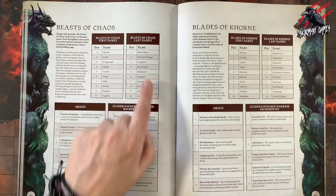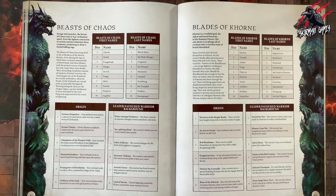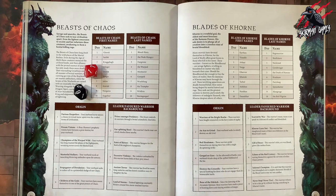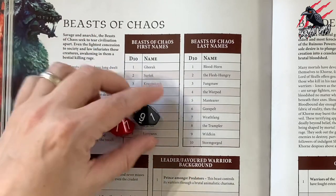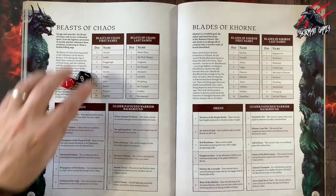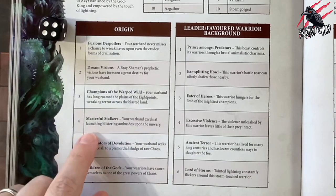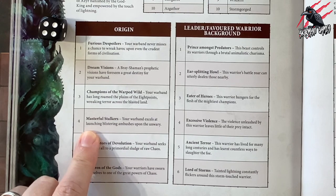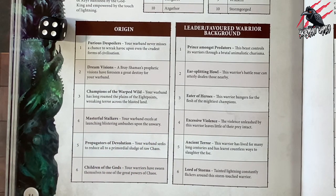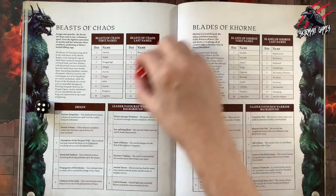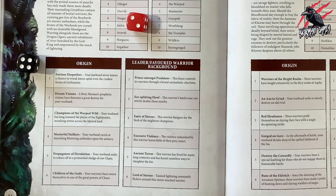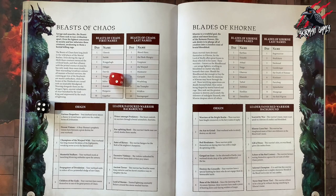You've got a first name and last name table and you can either choose a name or roll a dice and let it be totally random. So that might come out as Gorak Wildkin. The same goes for the origin and leader or favoured warrior backgrounds — you could choose or just roll a dice. On a four the origin of your warband could be 'masterful stalkers' and your warband excels at launching blistering ambushes upon the unwary. And then if you went random for the leader that would be a two — 'ear-splitting yell: this warrior's battle roar can utterly deafen those nearby.'